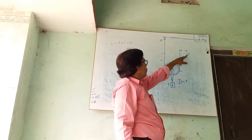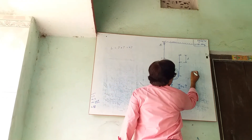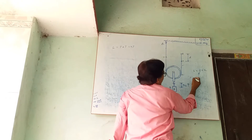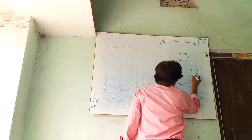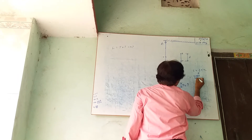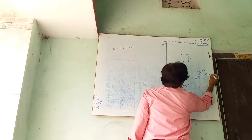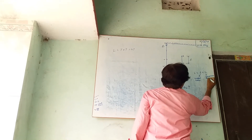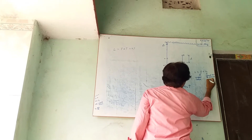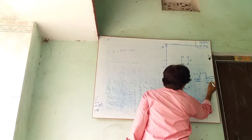Therefore, L is equal to T plus T, where L is equal to the useful load L plus X. Here, L is the actual or useful load, and X is the load due to friction and weight of the pulley.